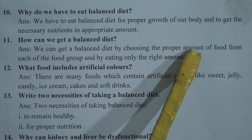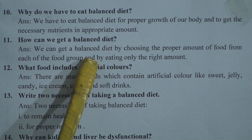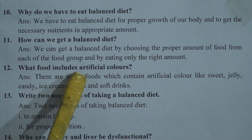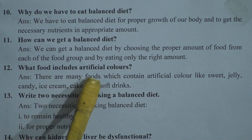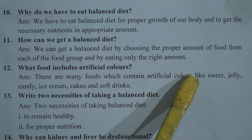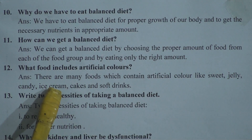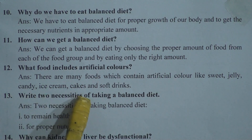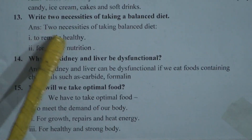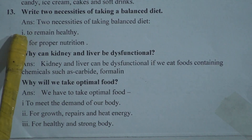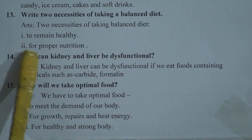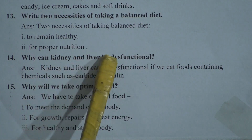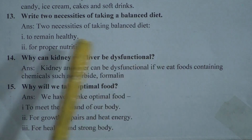Question 12: What foods include artificial color? Answer: There are many foods which contain artificial color, like sweets, jelly, candy, ice cream, cakes, and soft drinks. Question 13: Write down two necessities of taking a balanced diet. Answer: Two necessities of taking a balanced diet are — first, to remain healthy; second, for proper nutrition.